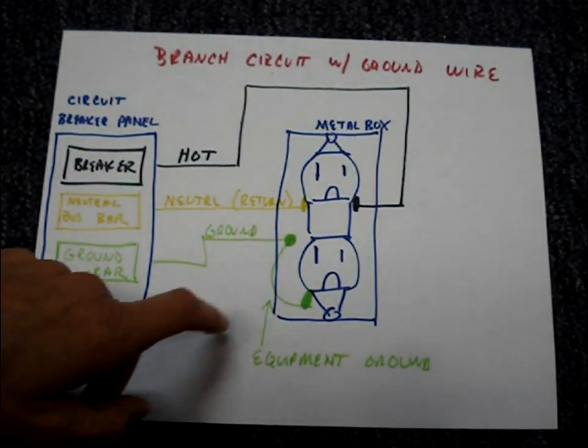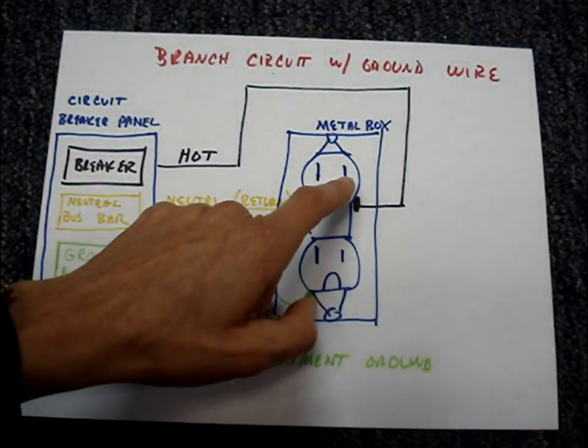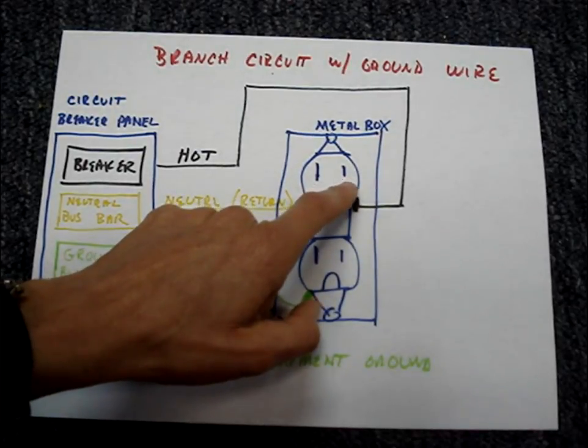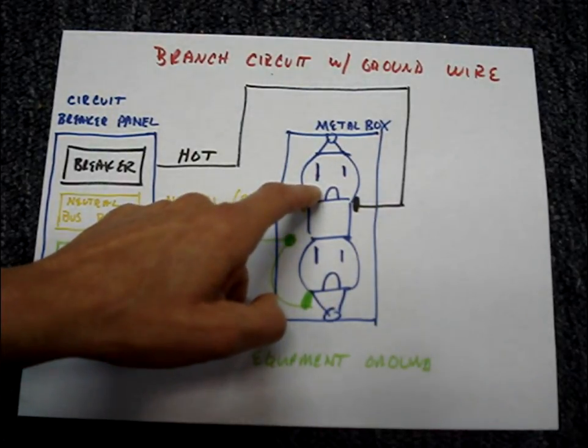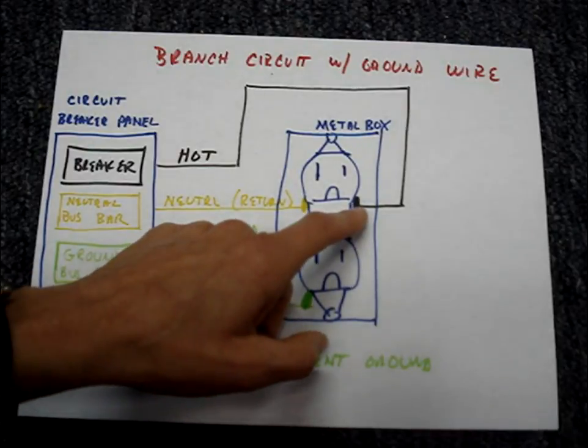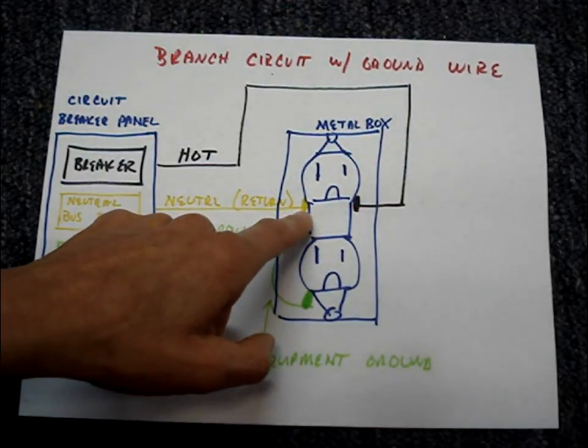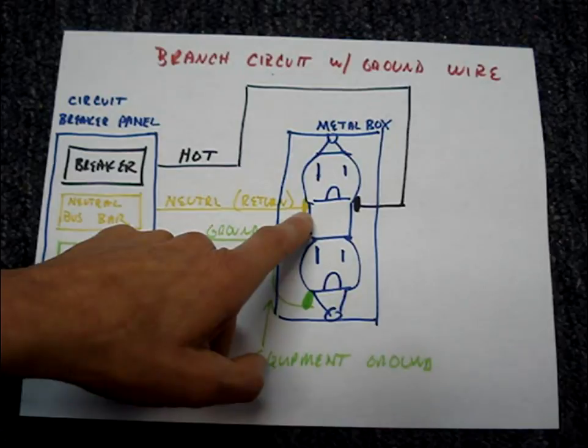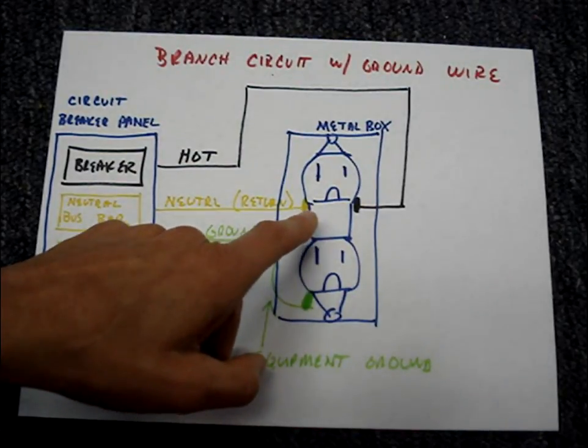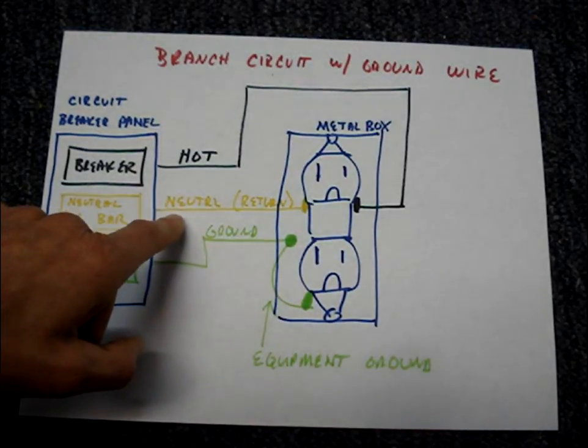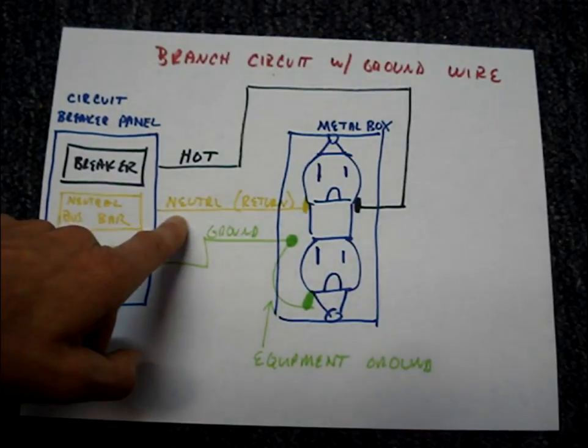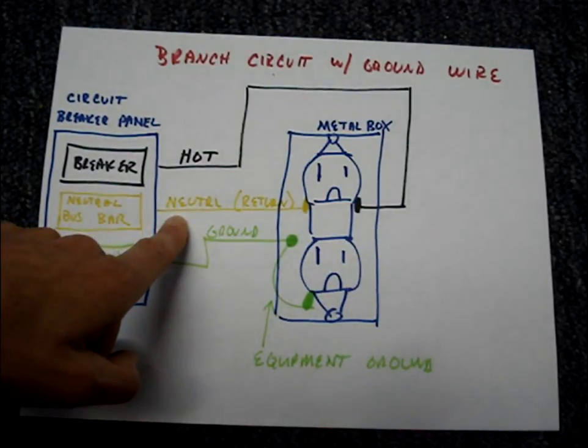If I were to put a wire between the hot and neutral holes in the outlet, that would cause a dead short across the hot and neutral. In other words, there's no load and that would cause a high current situation on the circuit which would cause the breaker to trip and turn power off to this circuit.